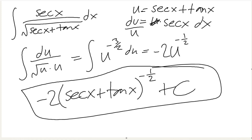Very sneaky, but once you know it, it's super fast and you just go straight to the answer like this. The substitution is super easy — no trig manipulation, just the secret secant trick. That's all it is.